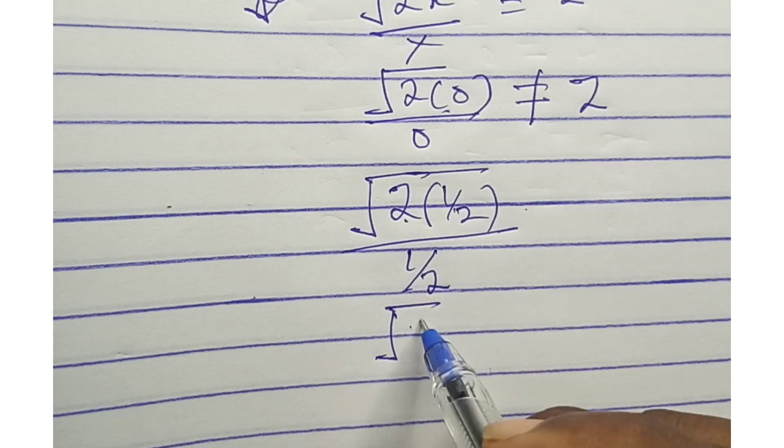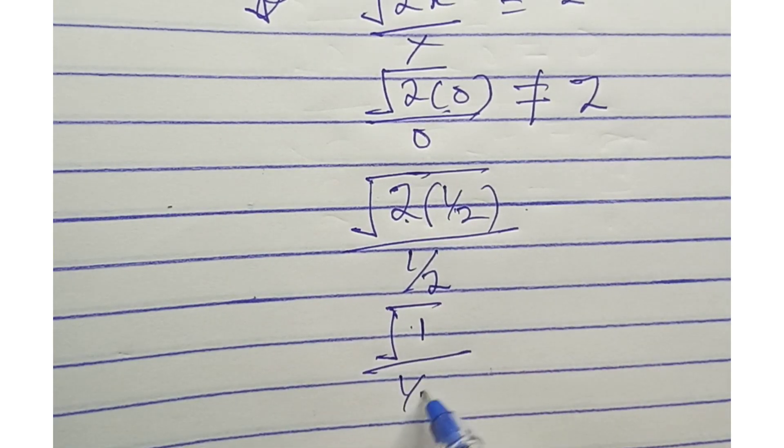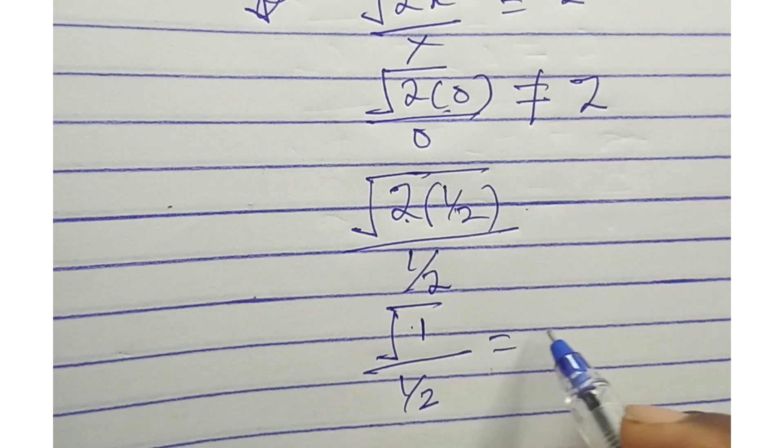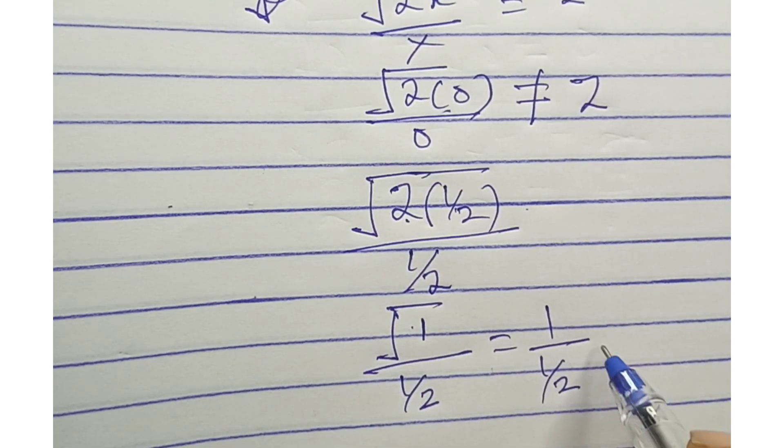2 times 1 over 2 is 1 over 1 over 2 here, which will surely give you 1 divided by 1 over 2, and the result is 2.